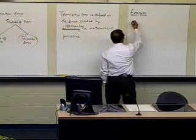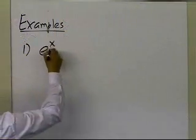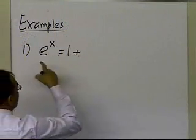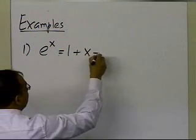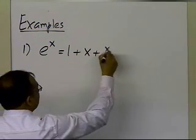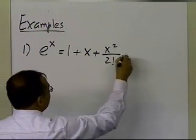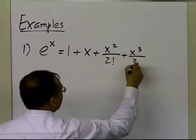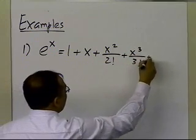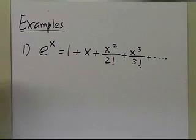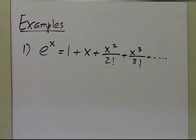One example: suppose you are using the Maclaurin series. The Maclaurin series for e to the power of x is 1 plus x, plus x squared over 2 factorial, plus x cubed over 3 factorial, and so on. There are an infinite number of terms in this series for e to the power of x.